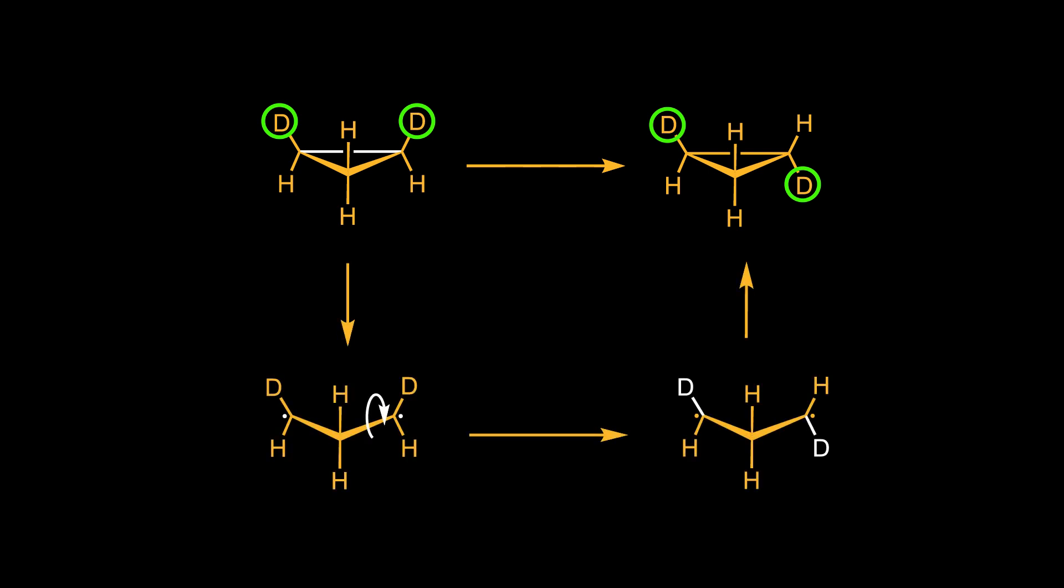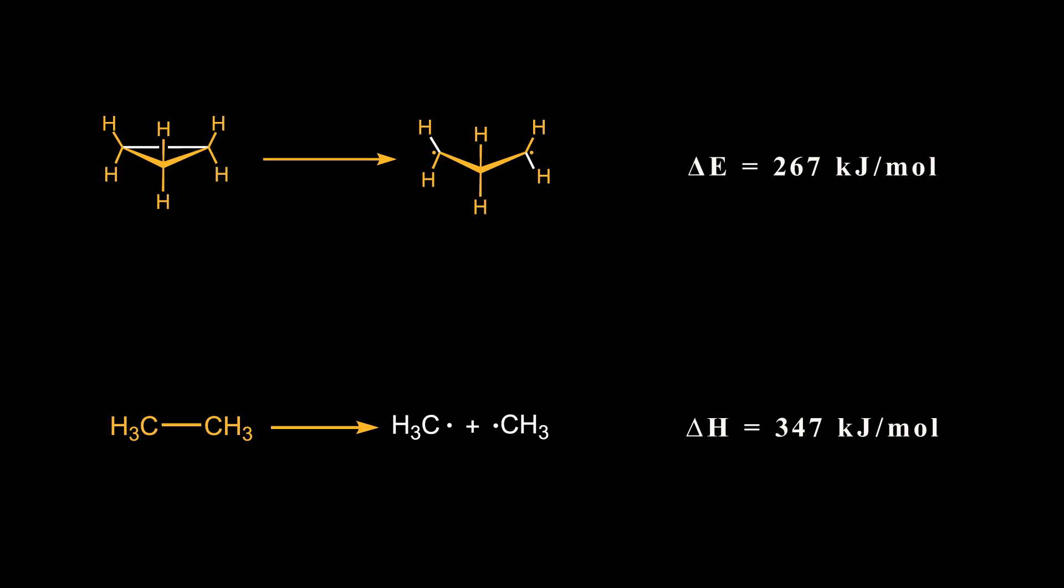Look at this reaction in which cis-1,2-dideuterocyclopropene is converted to its trans conformation. In the first step, the carbon-carbon bond undergoes homolytic cleavage to create a diradical transition state. After that, a bond rotation occurs in the molecule. Next, bond reclosure produces a trans product. The energy required for breaking the carbon-carbon bond in this reaction is 267 kJ per mole.